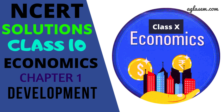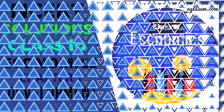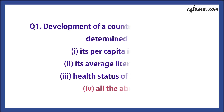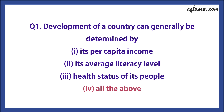So here, let's discuss questions and answers. Question number 1 says: development of a country can generally be determined by 1. Its per capita income, 2. Its average literacy level, 3. Health status of its people, 4. All of these. So the answer is 4, that is, all of these.